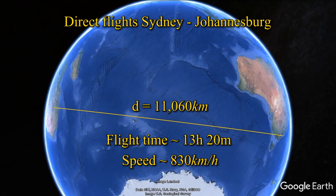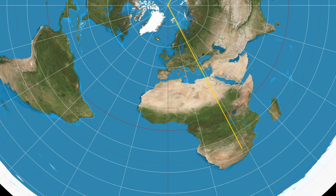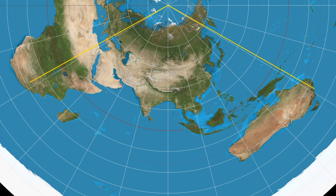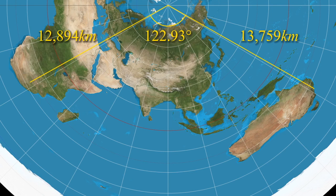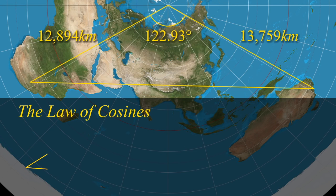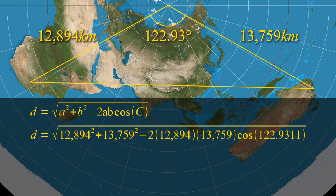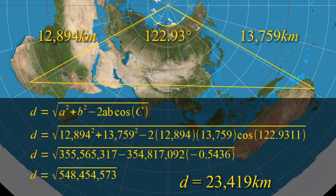As you might have expected, things on the Flat Earth aren't quite so simple. Sydney airport is 151.1772 degrees east. Johannesburg's OR Tambo airport is 28.2461 degrees east. The difference in longitude is therefore 122.9311 degrees. Sydney airport is 13,759 kilometres from the North Pole, and OR Tambo airport is 12,894 kilometres from the North Pole. Now that we have two sides of the triangle and the angle between them, we can use the law of cosines to calculate the straight-line distance from Sydney to Johannesburg on the Flat Earth. The distance d equals the root of a² + b² − 2ab cos(C). When we crunch the numbers we find that on the fantasy Flat Earth the distance is 23,419 kilometres — more than twice as far as it is in reality.